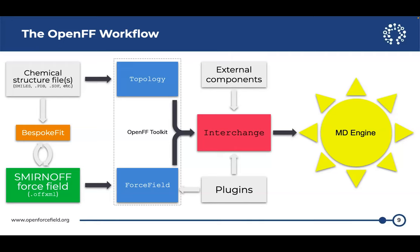If you want more accurate parameters for some drug series with exotic chemistry not from any of our training sets, we've got BespokeFit — it slots in perfectly. And if you want to do anything unusual, we've got documentation. All the code is open source, so if you can't find your answer in the docs and you're comfortable with Python, you can probably find it in the code. We have first-class support for Jupyter Notebooks, making it easy to record and communicate your workflow so others can use and modify it.